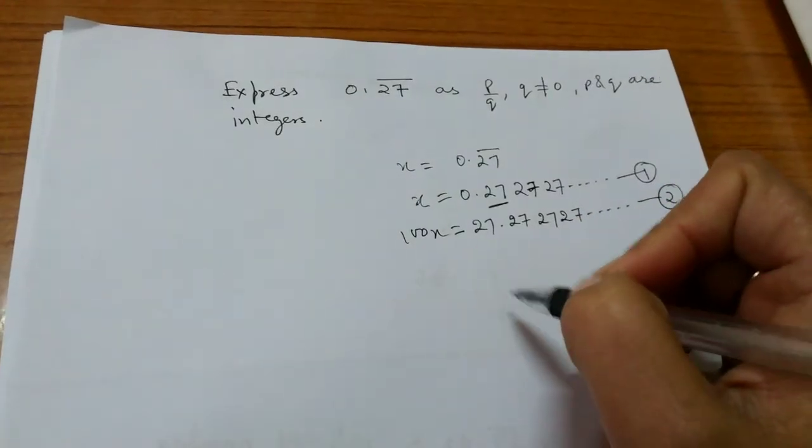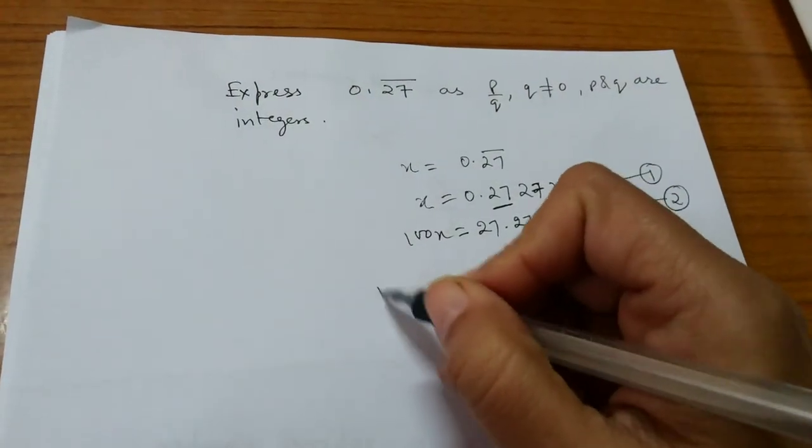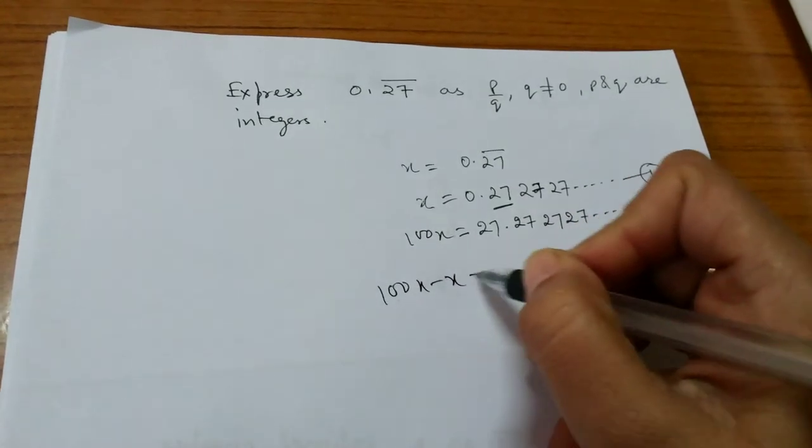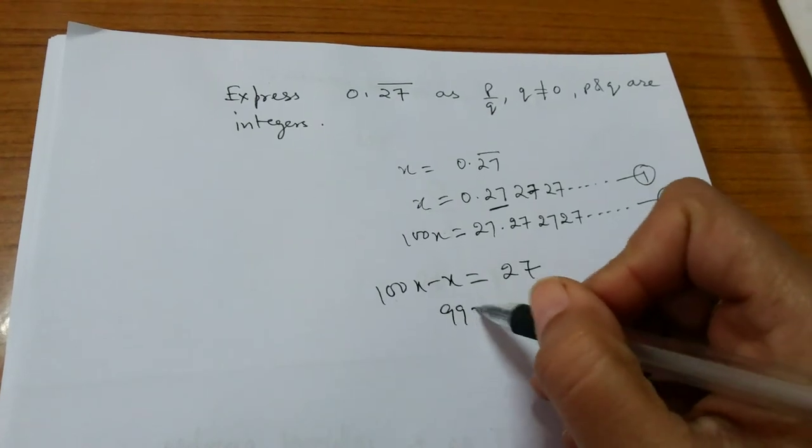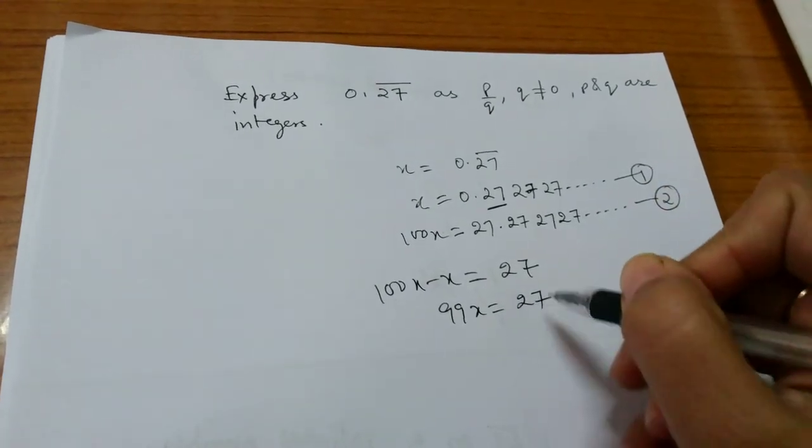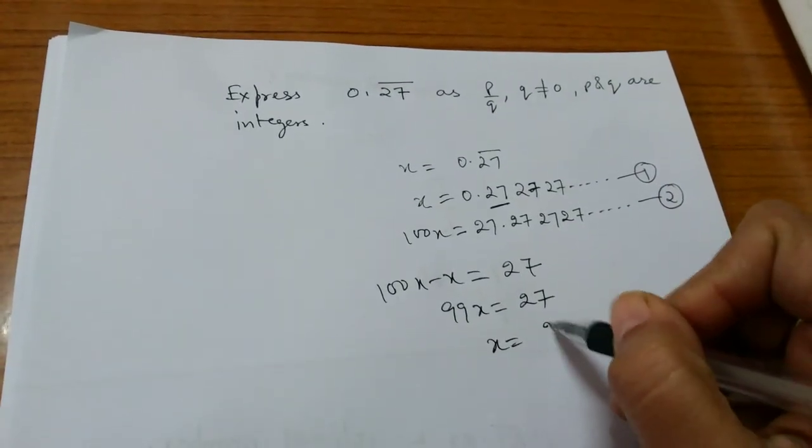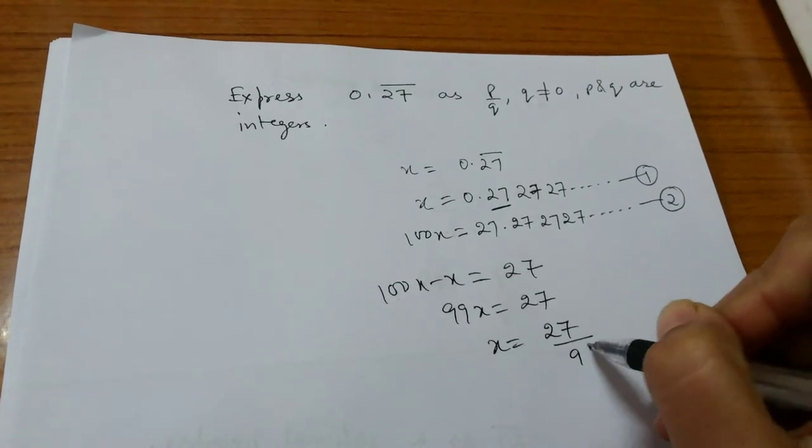Subtract 1 from 2. We get 100x minus x is equal to 27. That is 99x equals 27, which means x equals 27 by 99.